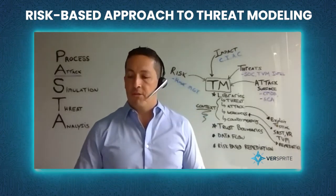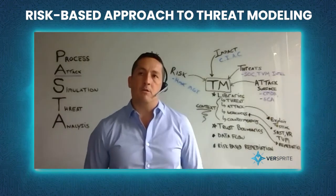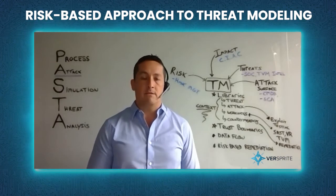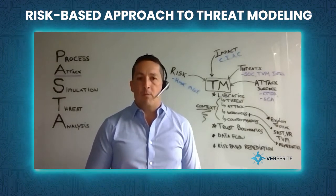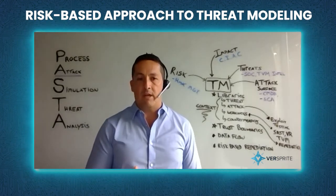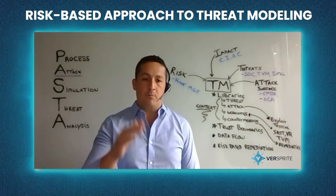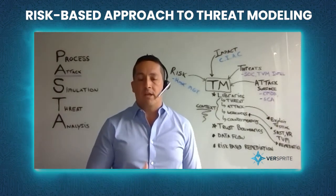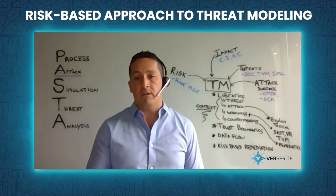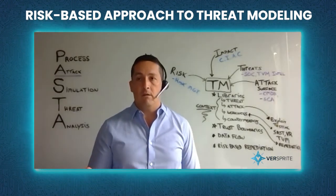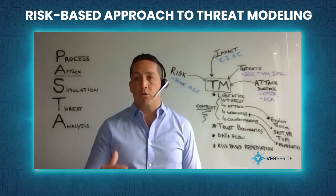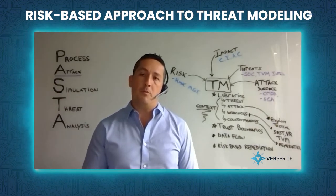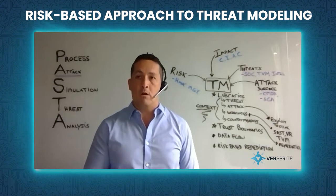One of the things we oftentimes get as feedback from those that have done threat modeling in other fashions is time — it seems to be a very laborious activity. The good thing about PASTA — I invite you all to download the ebook available off versprite.com — it basically details the seven-step process and what activities go along with those seven stages. You can take it, just like GitLab has recently done, and adapt it to fit your needs. You might begin a maturity model for adopting threat modeling — it's not about going from zero to sixty all in one fell swoop. It's about seeing what aspects of threat modeling are important to you.